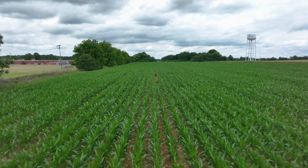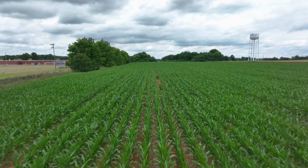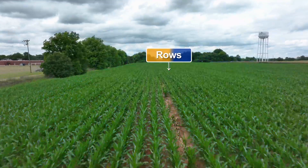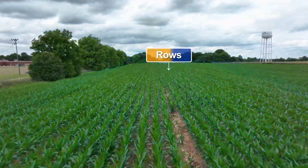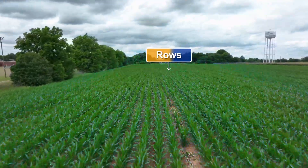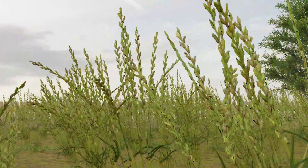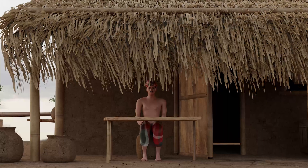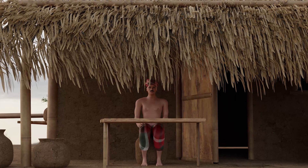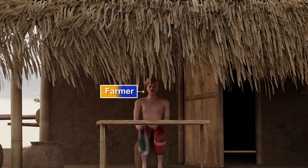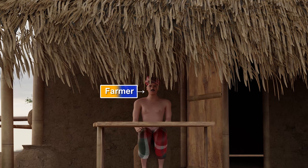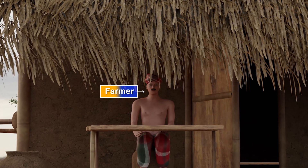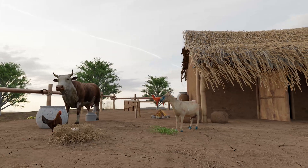There are rows and rows and rows of plants. These plants give us these grains. Why is that farmer under the shade? Oh, I guess it's the farmer.